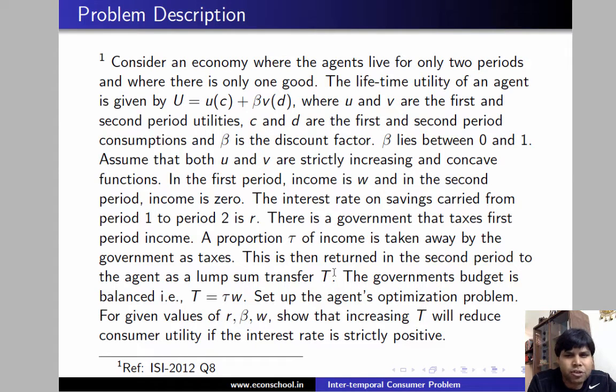We have to set up the agent's optimization problem and for given values of R, beta, W we will show that increasing T will reduce the consumer's utility if the interest rate is strictly positive. So let us set up the problem first.